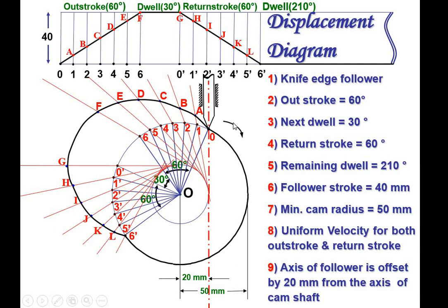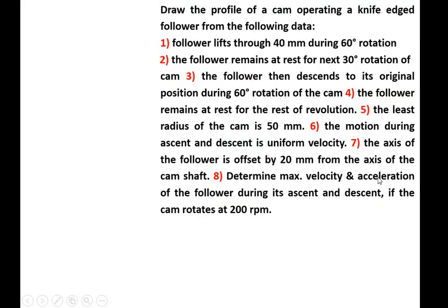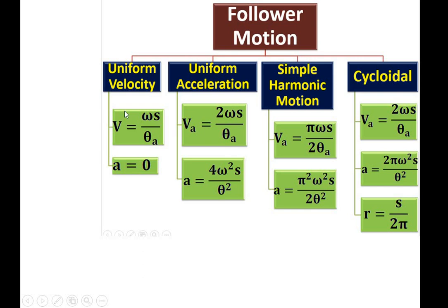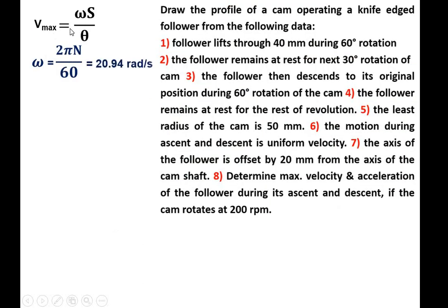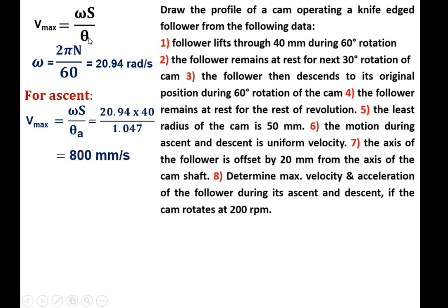Now the second part — the numerical portion. Point number 8: determine maximum velocity and acceleration of the follower during its ascent and descent if the cam rotates at 200 RPM. For uniform velocity, V equals omega times S divided by theta. To find omega: omega equals 2π N over 60, and N is 200 RPM, giving omega equal to 20.94 radians per second. For the ascent, maximum velocity equals omega times S divided by theta-A (ascent angle), which is 60 degrees.